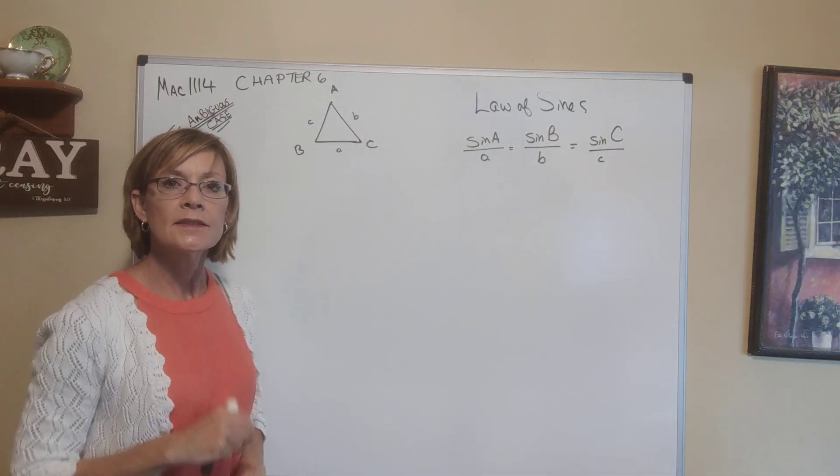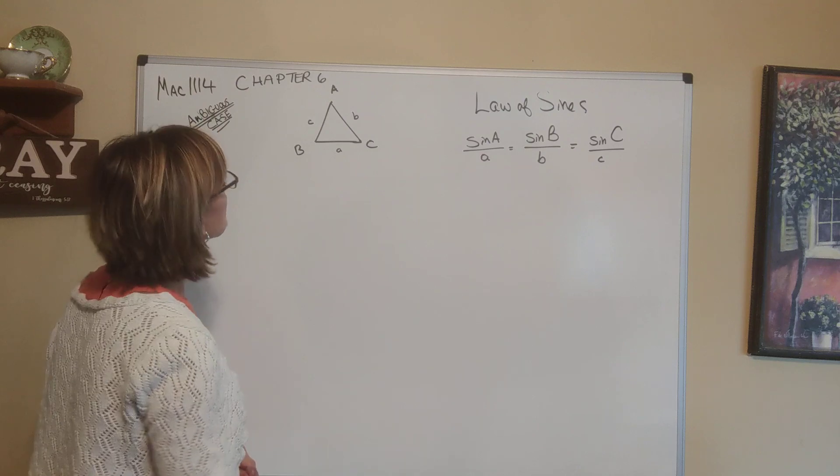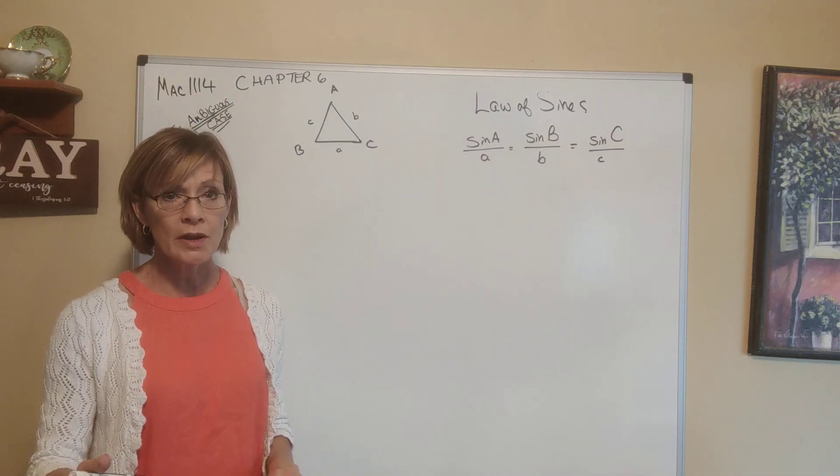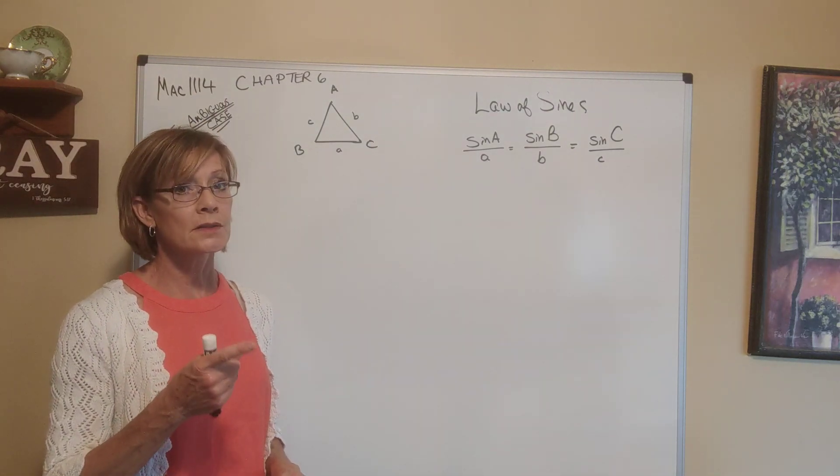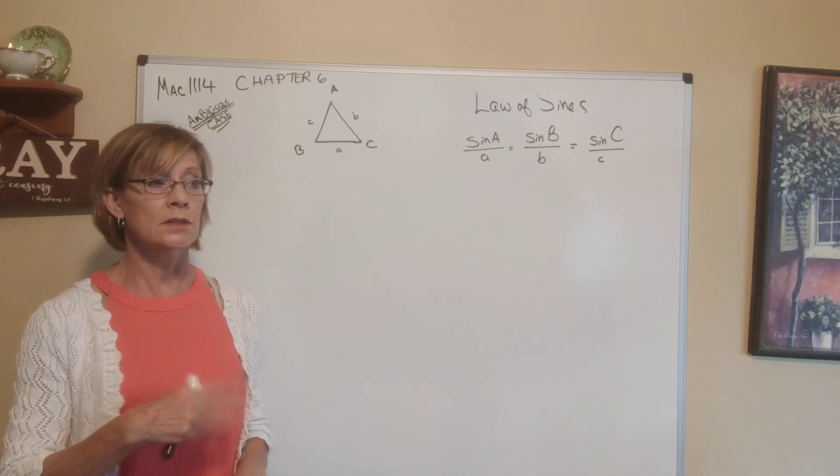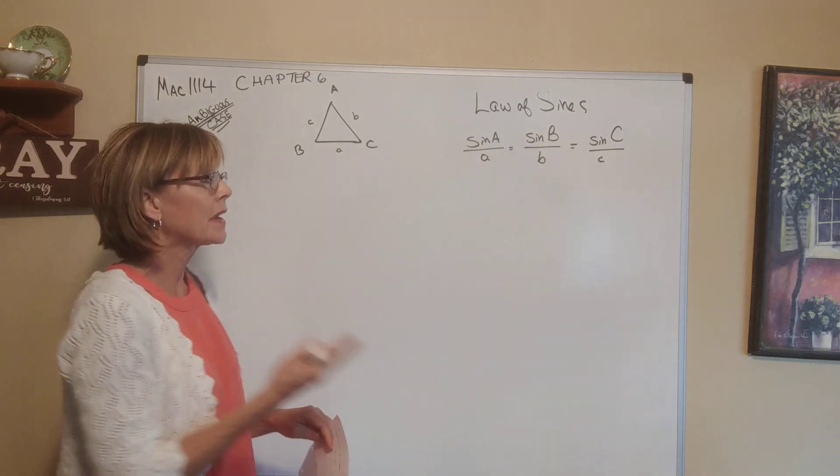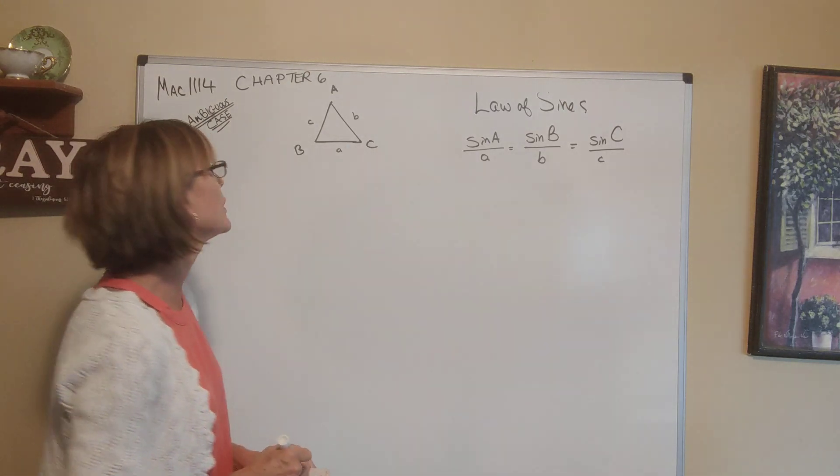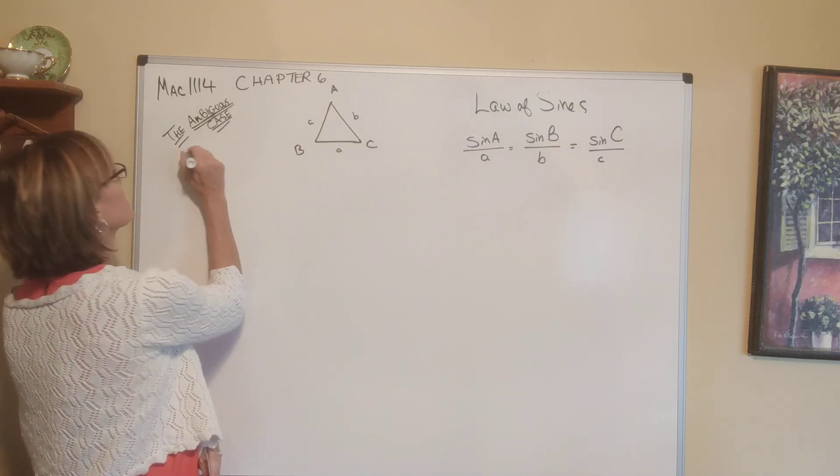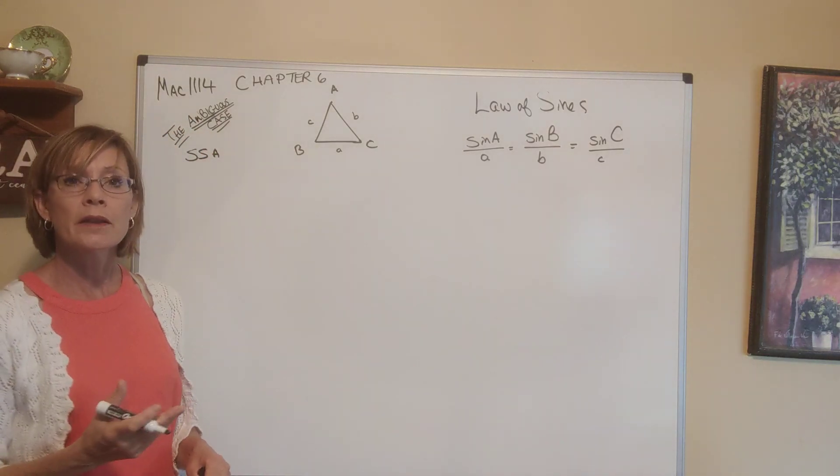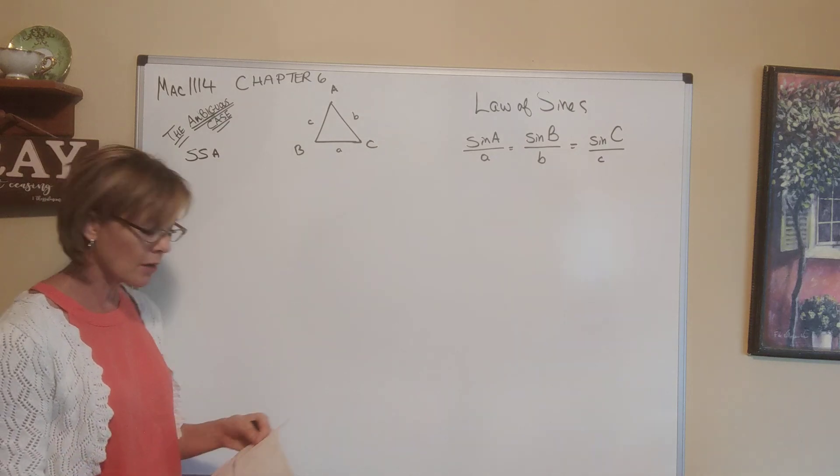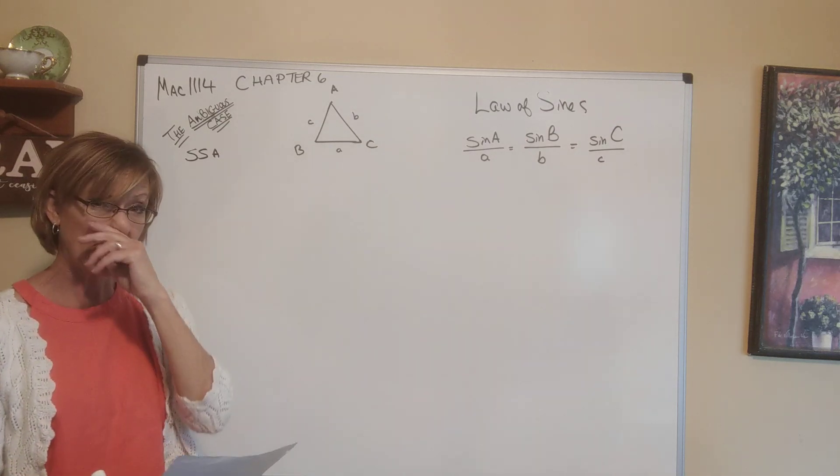Okay, Law of Sines, the ambiguous case. This is the case where it could be that zero triangles exist, one triangle exists, or two triangles exist. We don't know when we're given this information, and this is when we are given side-side-angle. We just don't know what kind of triangles could be created, so we have to do the work of figuring that out.